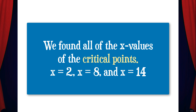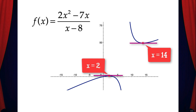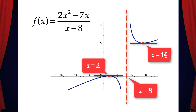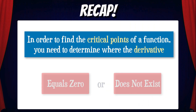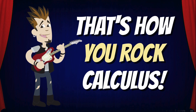Let's take a look at a graph to see how this all works visually. Here's a graph of this rational function f(x). There are horizontal tangents at x = 2 and x = 14 — these are the places where the derivative equals zero. There's a vertical asymptote at x = 8, which is a place where the derivative does not exist because there's a discontinuity in the function. So we found the x-values of the critical points of f(x). To recap: to find the critical points of a function, you need to determine where the derivative equals zero or does not exist. And that's how you rock calculus!